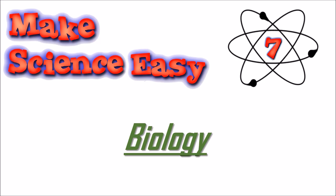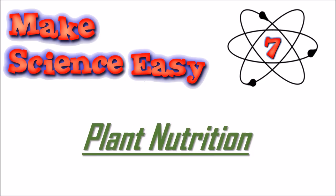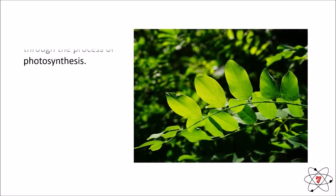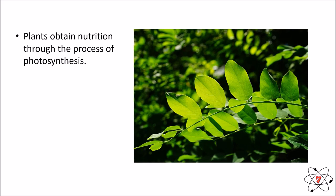Hello, welcome to another lesson of Make Science Easy. We're carrying on with the biology course. Today we're going to be learning about the topic of plant nutrition. Plants get their nutrition through the process of photosynthesis. Photo means light and synthesis means to make, so photosynthesis literally means to make from light, which means plants make their own nutrients — at least in terms of their food and what they get their energy from.